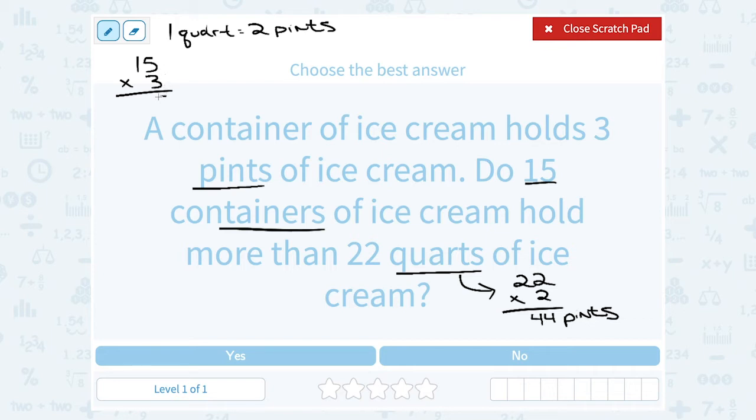Well 3 times 5 is 15. So write the 5 carry the 1. 3 times 1 is 3 plus the extra 1 is 4. So we get 45 which means all 15 containers would hold 45 pints.